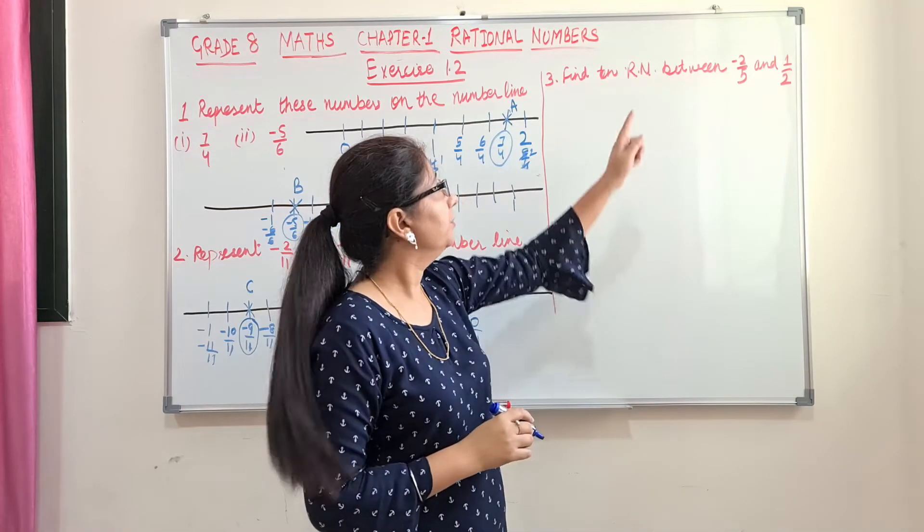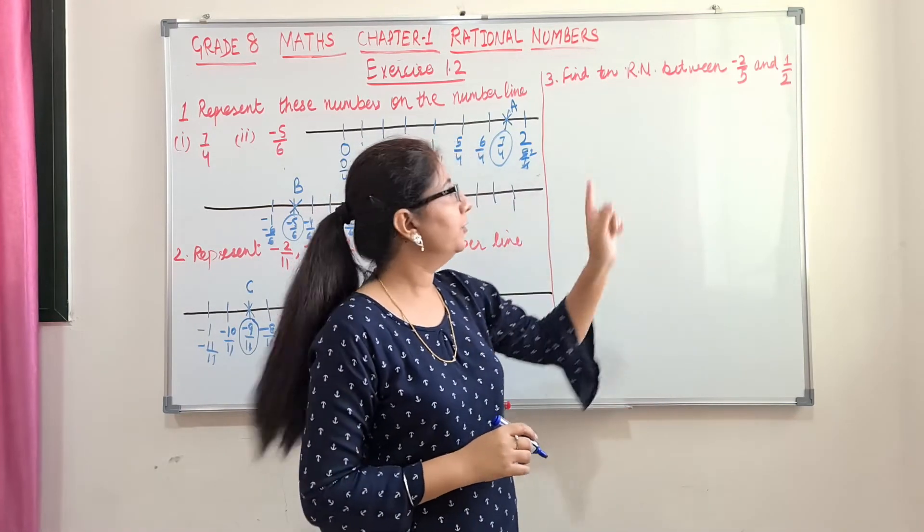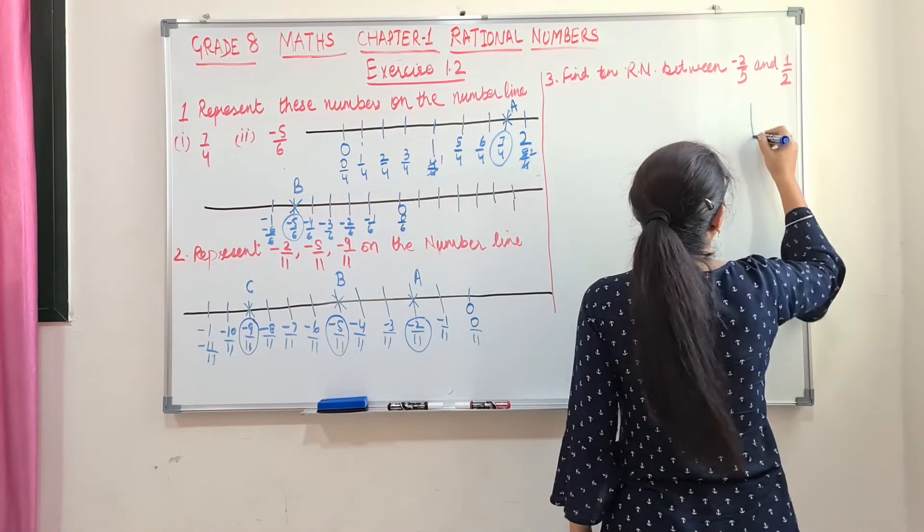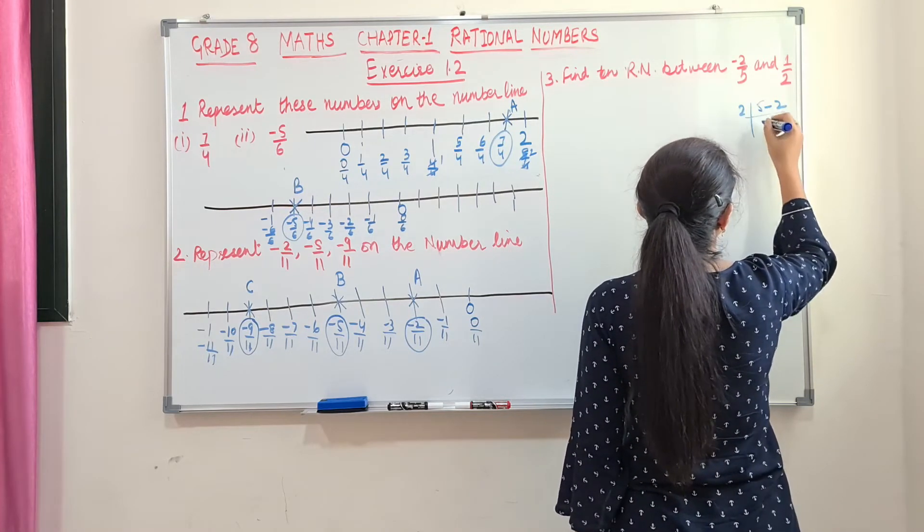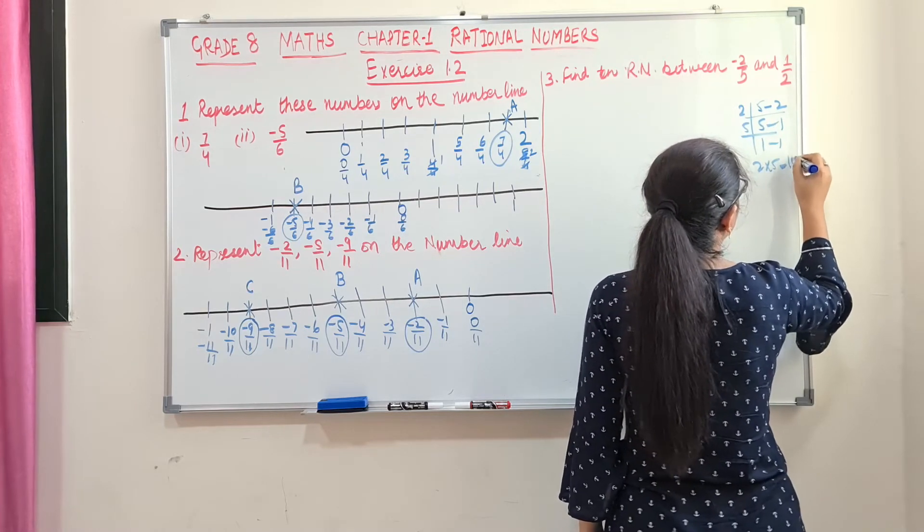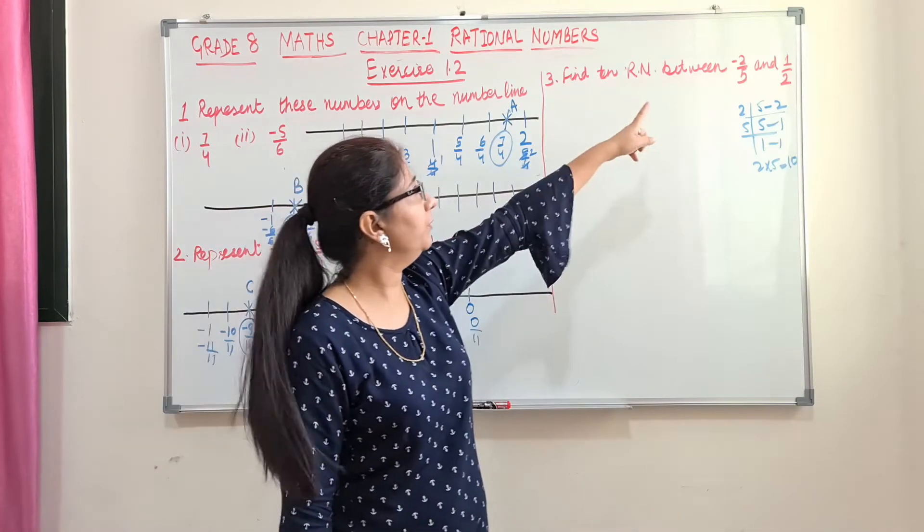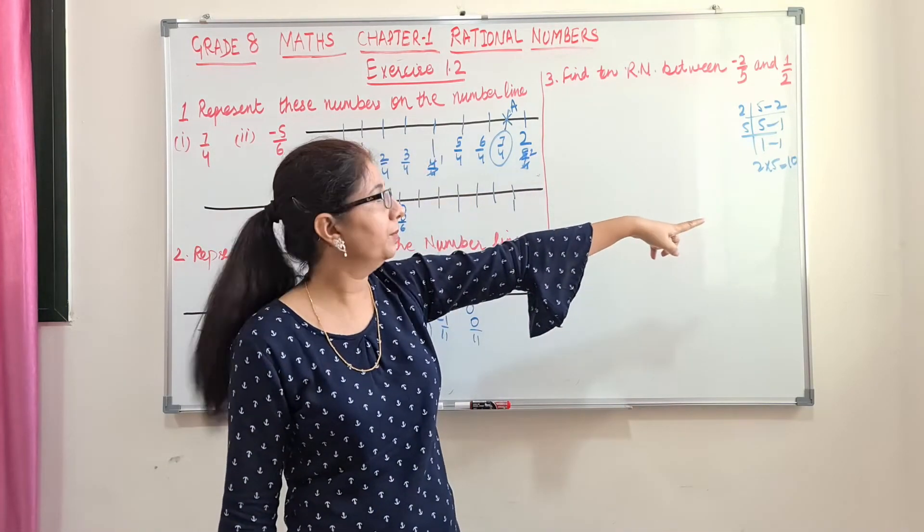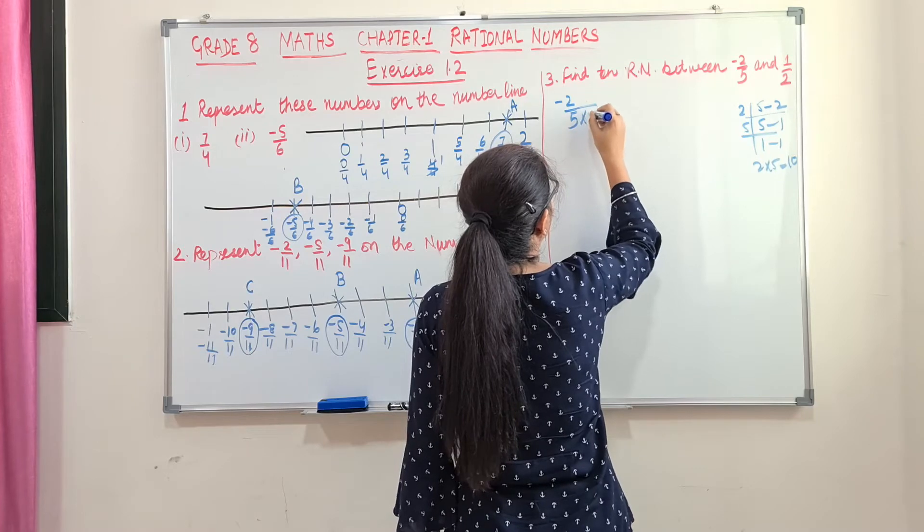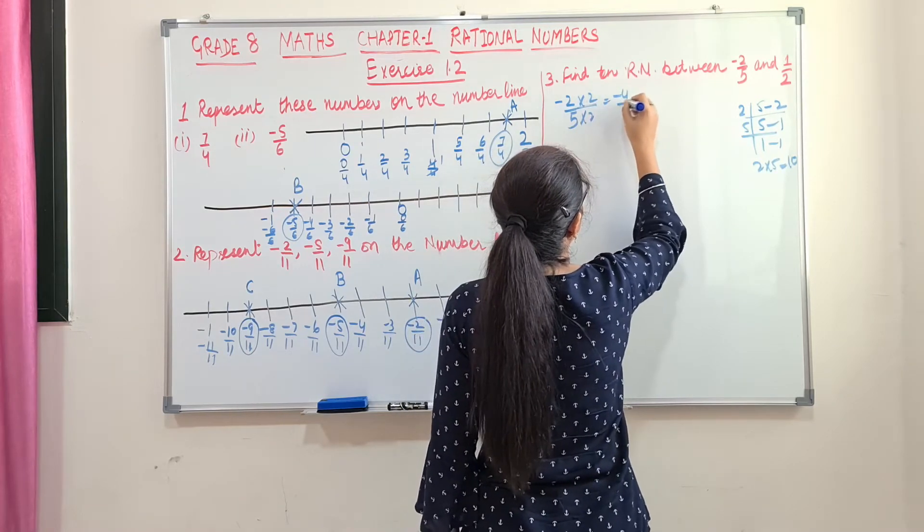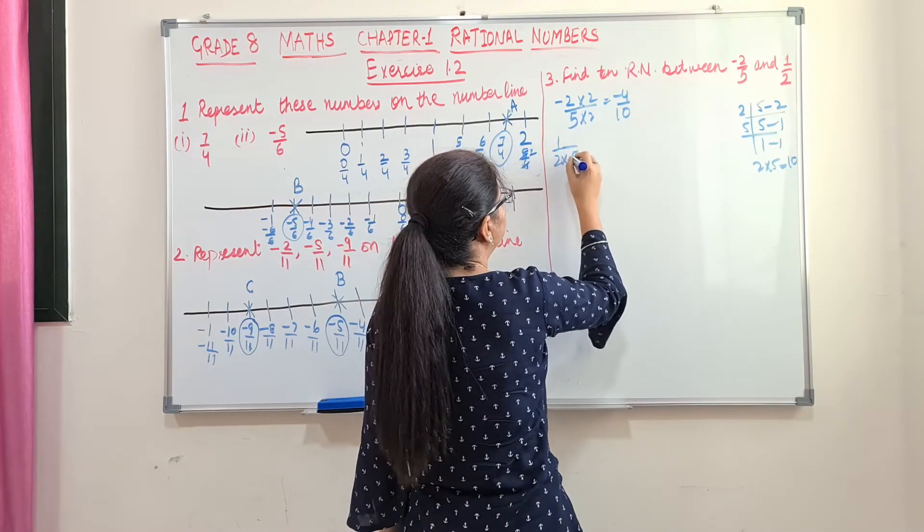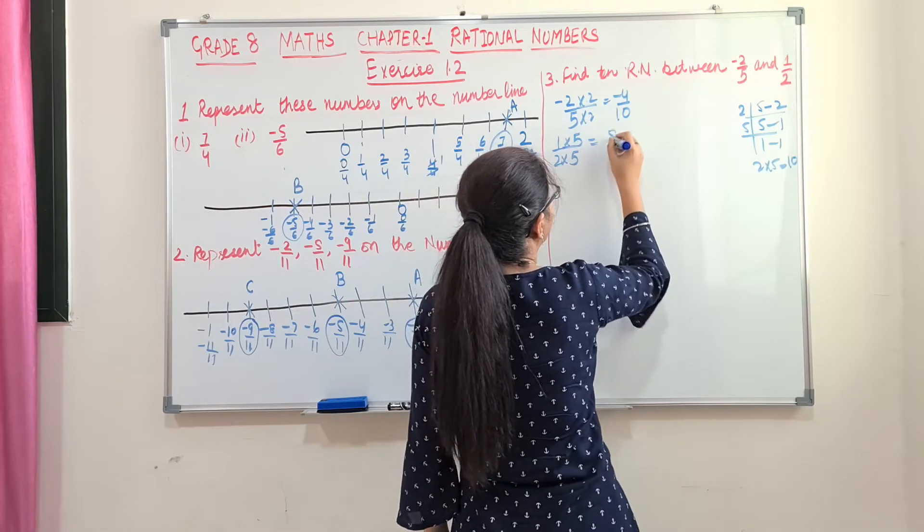10 rational numbers between minus 2 by 5 and 1 by 2. The first step should be we should make the denominators same by taking LCM. Here what should be the LCM? 5 and 2. This is 2. Then 5, LCM is 10. What should be our next step? We will convert these numbers into the numbers which has denominator as 10. So minus 2 by 5, how to make 10? Multiply with 2. We will have minus 4 by 10. And second number is 1 by 2. How to make 10? Multiply by 5. This is 5 by 10.